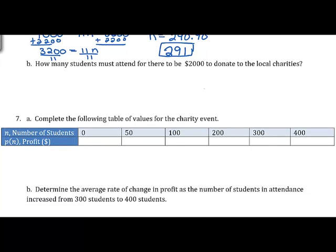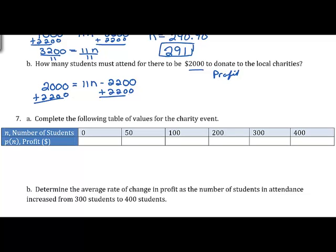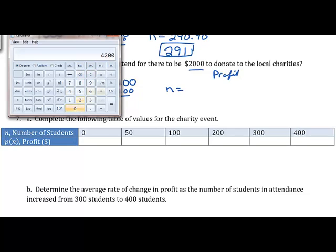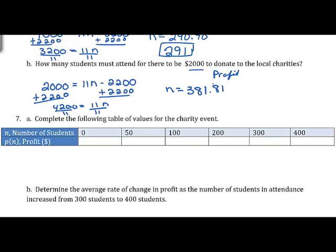How many students must attend for there to be $2,000 to donate? We replace P(N) with 2,000: 2,000 = 11N − 2200. Add 2200 to both sides to get 4,200 = 11N. Dividing by 11 gives 381.81 repeating. Rounding up to ensure at least $2,000, we need 382 students.